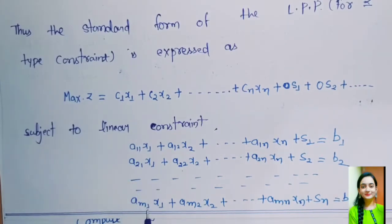Similarly, am1x1 + am2x2 + ... + amnxn plus the slack variable sm = bm.